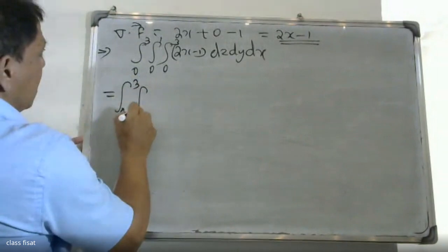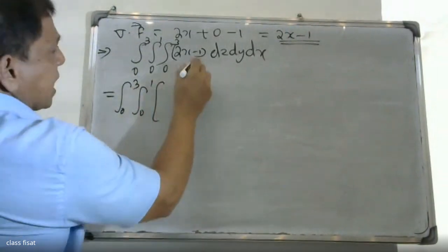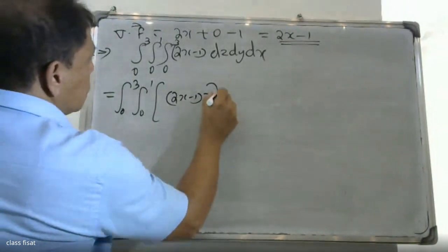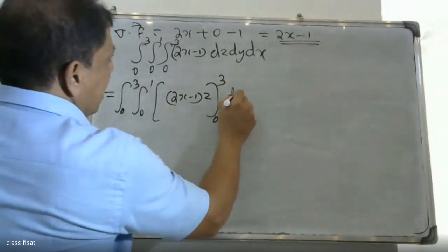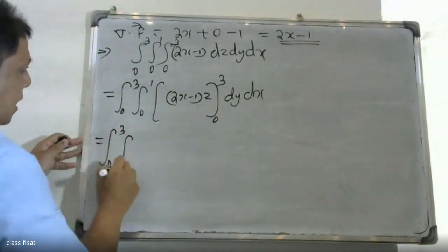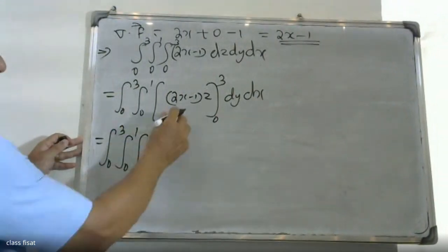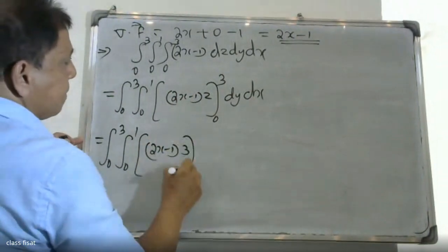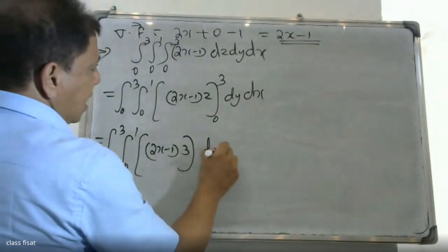Integral 0 to 3, integral 0 to 1 of (2x - 1) times z evaluated from 0 to 3, dy dx. That is integral 0 to 3, integral 0 to 1 of (2x - 1) times 3, dy dx, which equals 3 times integral 0 to 3, integral 0 to 1 of (2x - 1) dy dx.